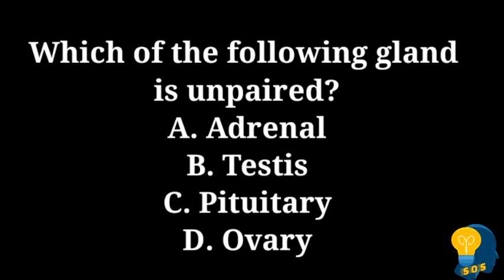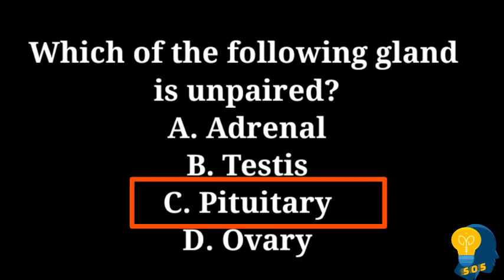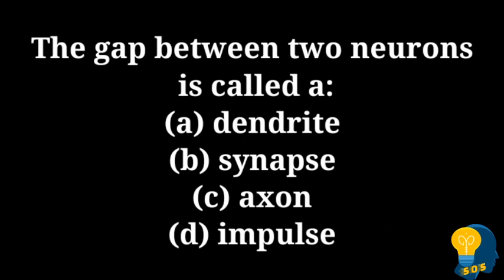Unpaired means they are not in a pair. The options are option A adrenal, option B testis, option C pituitary gland. The correct answer is pituitary gland. When we look at the structure of the human internal body, we can find a pair of adrenal glands above the kidneys, a pair of testes (testicles), and a pair of ovaries — but not a pair of pituitary glands. So the correct option is option C, pituitary gland.